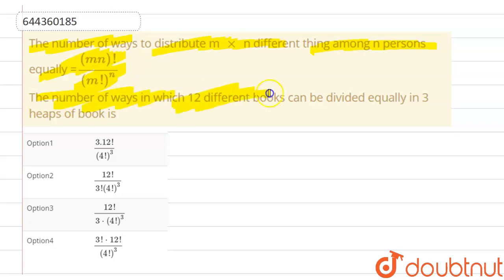So we have to find out the number of ways in which 12 different books can be divided equally into three heaps of books. We have four options given. So now let's find out. First of all, we have 12 different books and it is given that divided equally into three heaps.